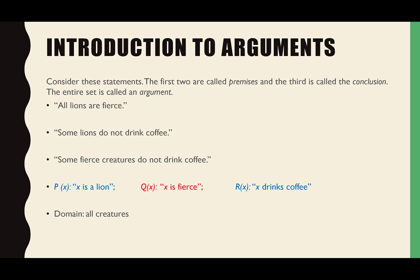Let's start off with this statement: 'All lions are fierce.' Whether or not this is true is irrelevant — this is what I'm claiming is true, just like a proposition. I'm also claiming that some lions do not drink coffee. Therefore, I can conclude that some fierce creatures do not drink coffee. If it's true that all lions are fierce, and if it's true that some lions don't drink coffee, then it's obviously true that some fierce creatures don't drink coffee.